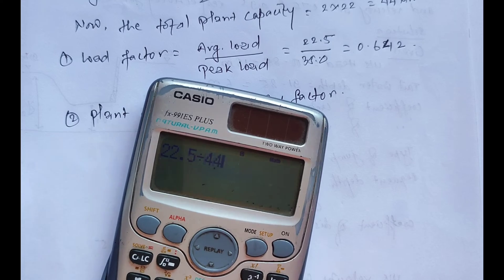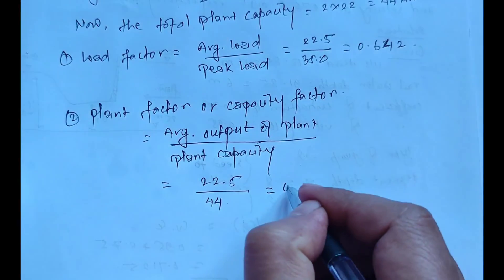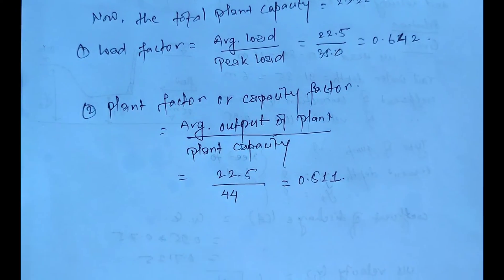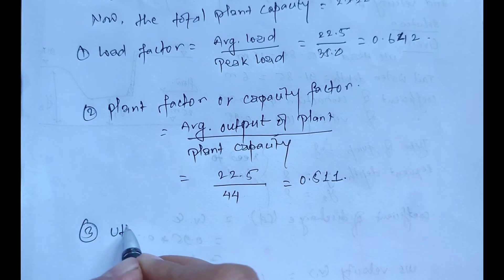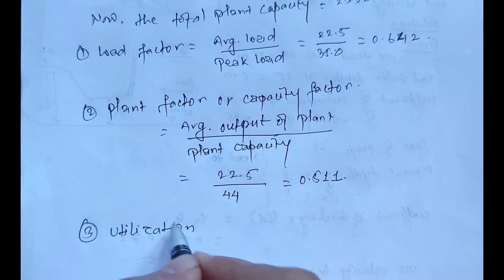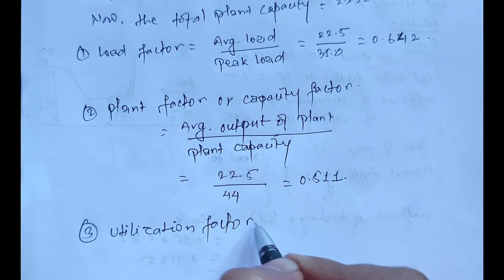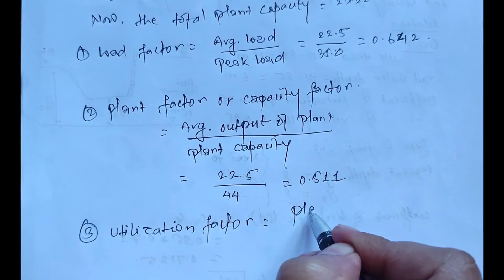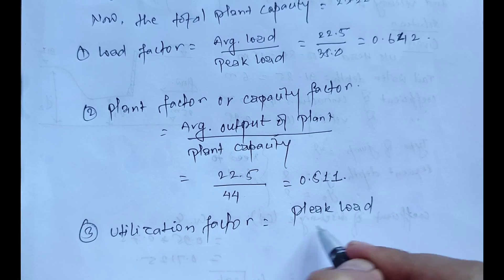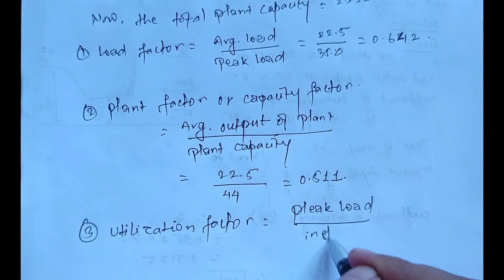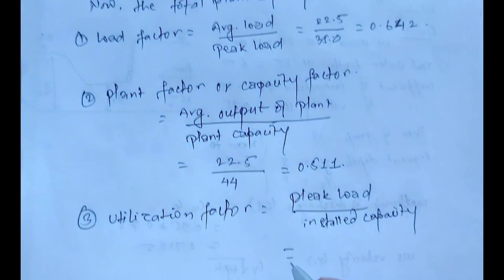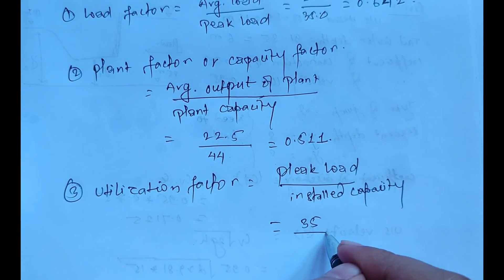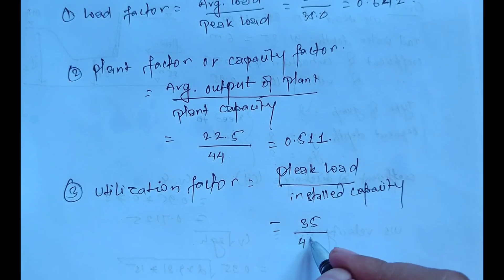Now the third is utilization factor. Utilization factor equals peak load divided by installed capacity. The peak load is 35 megawatts and the installed capacity is 44 megawatts, which equals